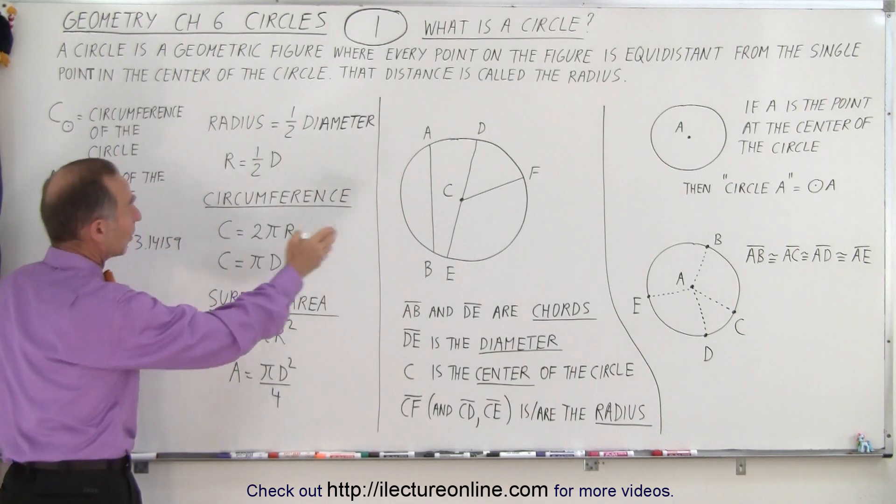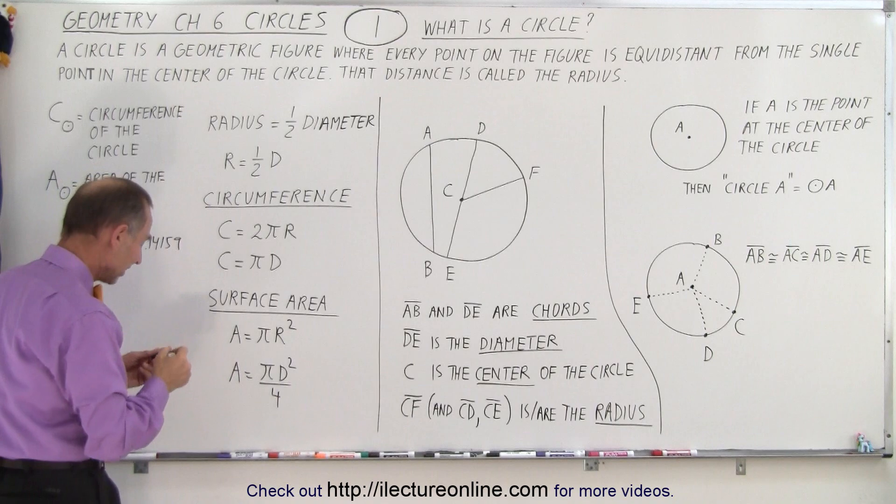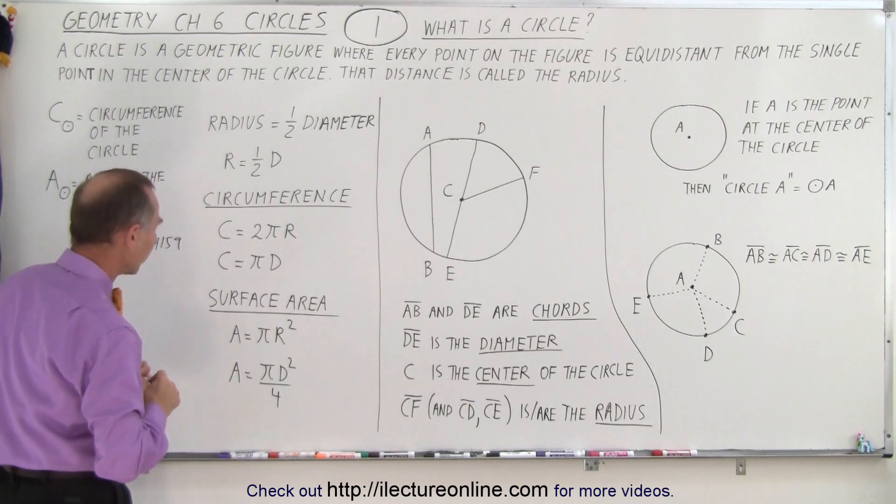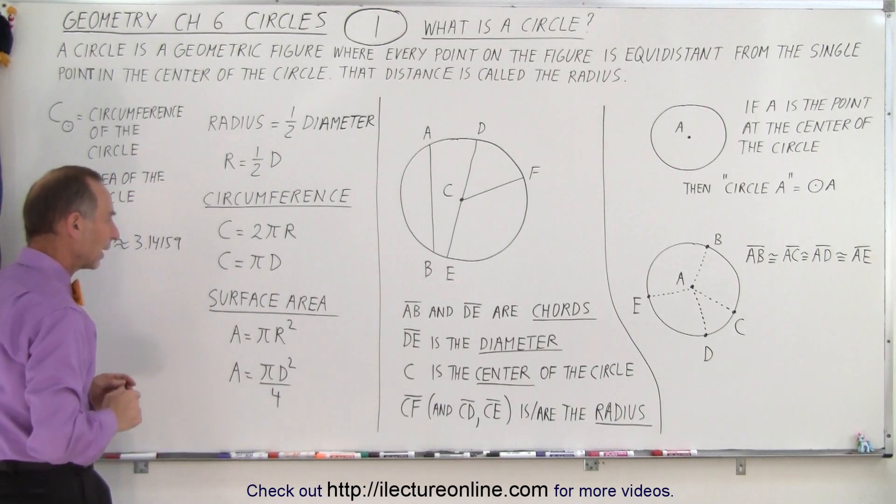But of course it goes down to an infinite number of decimal places, because there's no exact number equal to the number π. We'll talk a little bit more about that in the next video.